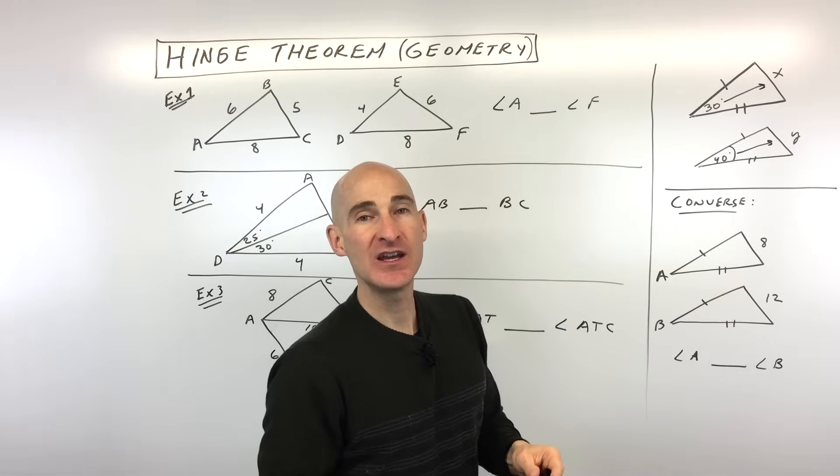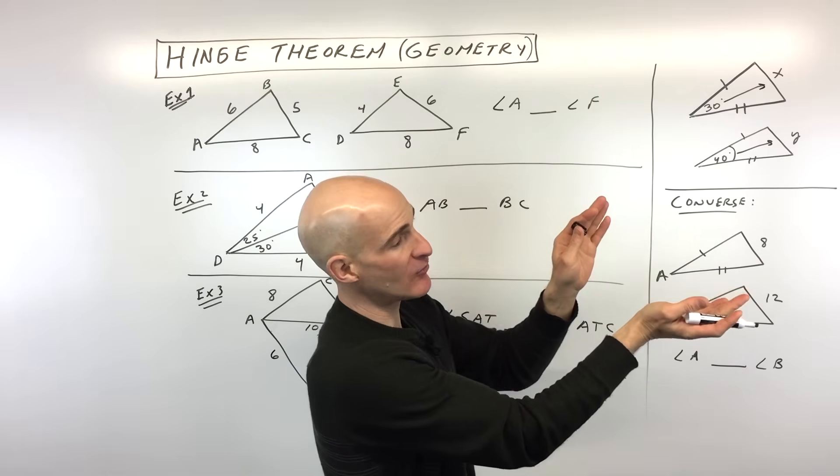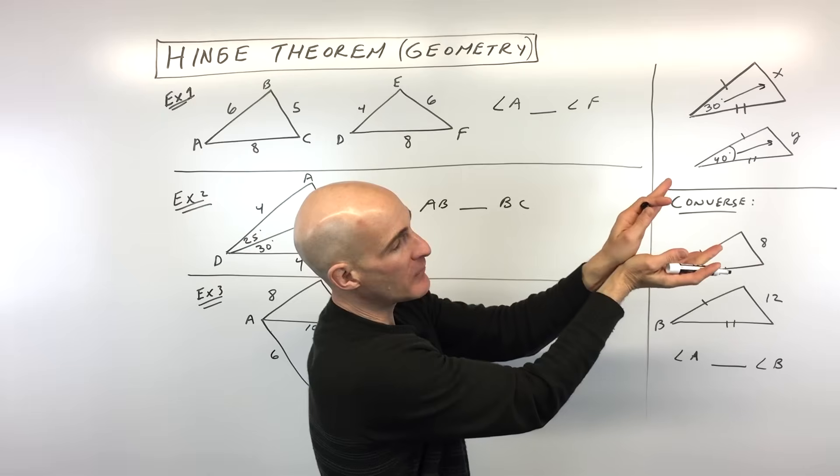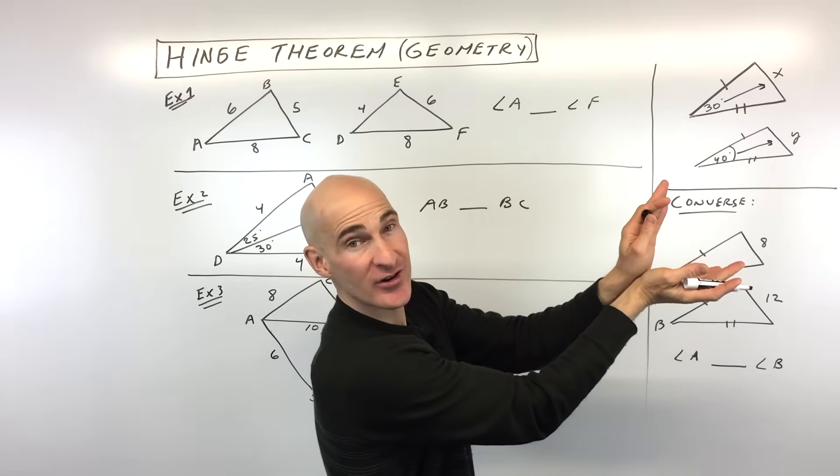The one that's across from the larger angle is going to be the longer side and that's why they call it the hinge theorem because you can see like this hand, my right hand, and my left hand.